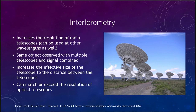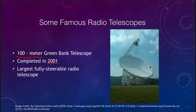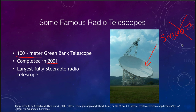In terms of telescopes with just one dish, we have the 100-meter Green Bank Telescope, completed in 2001 — about the size of a football field across — and it is the largest fully steerable radio telescope. You're actually steering something larger than a football field and pointing it at different parts of the sky. The dish is curved much like a mirror, but it does not need to be nearly as smooth as an optical telescope mirror, because the wavelengths are so much longer — it only has to be smooth relative to the wavelengths being observed. It reflects the signal to a detector that then sends signals down to the control room.